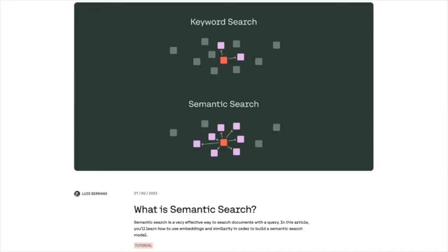This video accompanies a post you can find on the Cohere blog about semantic search. There's also a codelab you can follow along where you create a semantic search model for a small dataset. Both links are in the description of the video.